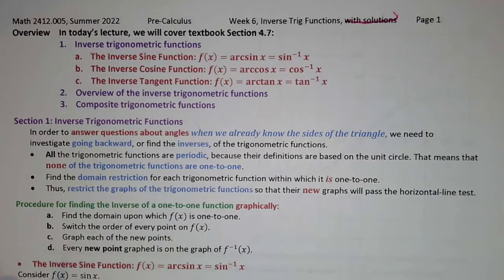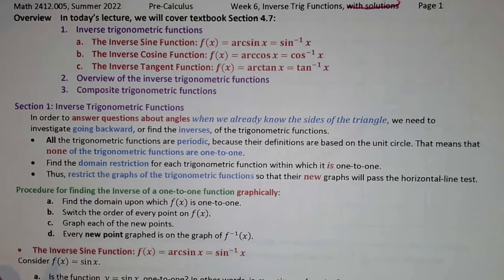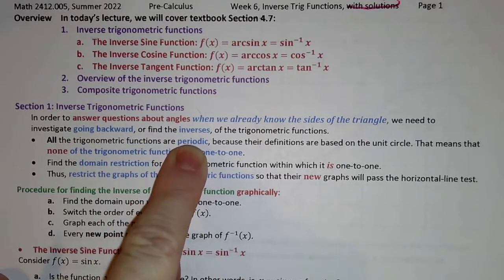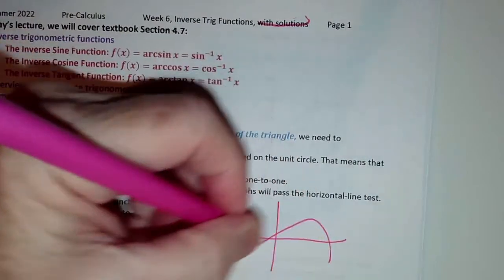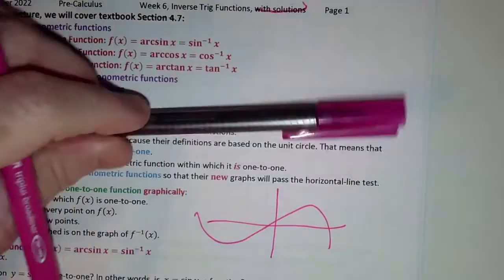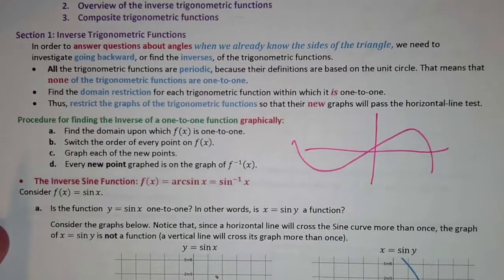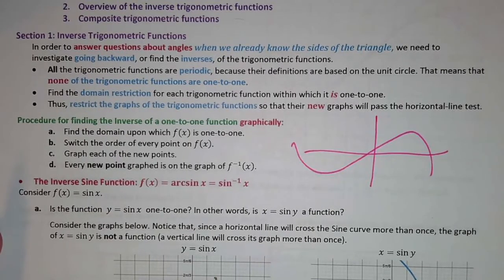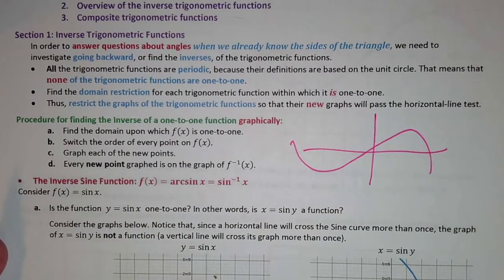Sometimes we want to go backward — we know the answer but not the question. In order to do that, we want to be able to go backward. But all trig functions are periodic, which means no trig function is one-to-one. Every single periodic function fails the horizontal line test. So our first goal is finding a reasonable, natural domain restriction on the sine, then the cosine, and then the tangent so that what results will be one-to-one.